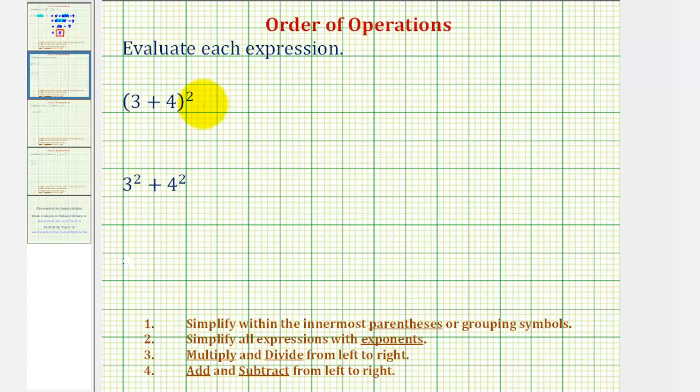So looking at our first expression, the order of operations tell us to first simplify within the innermost parentheses or grouping symbols, which means we want to simplify three plus four inside the parentheses first. And since three plus four is equal to seven, this simplifies to seven squared.